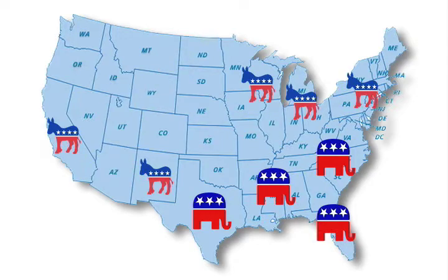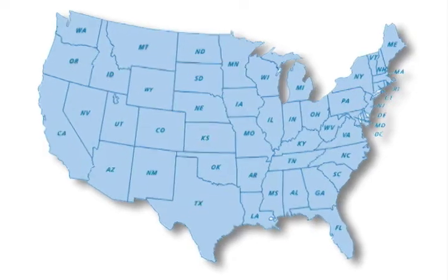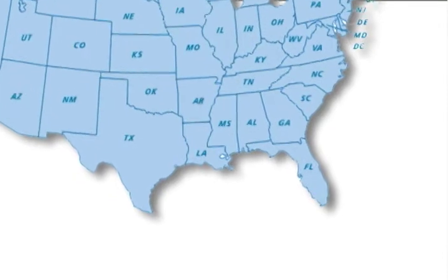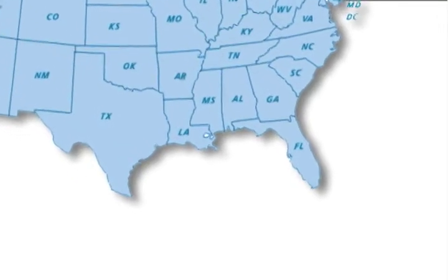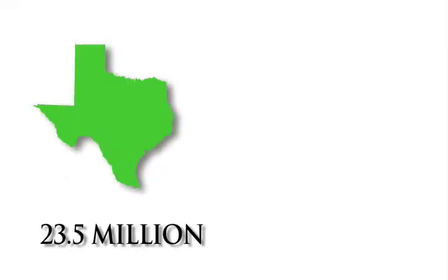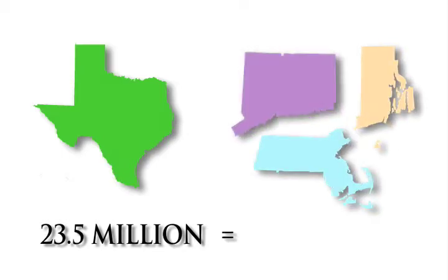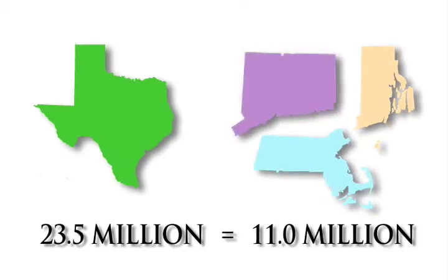However, your vote is not counted the way you think. Since each state has a different population size, it would not be fair for, let's say, Texas, which has a population of 23.5 million, to be counted equally as Rhode Island, Massachusetts, and Connecticut, which have a combined population of 11 million. That would be a one-versus-three count when Texas has a bigger population.